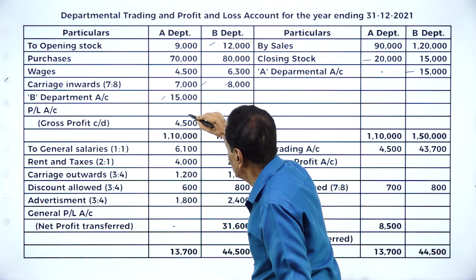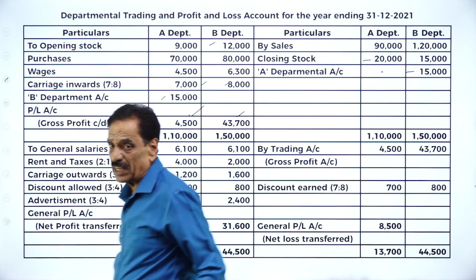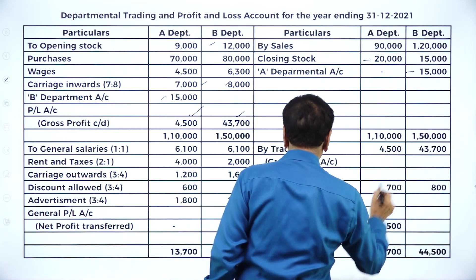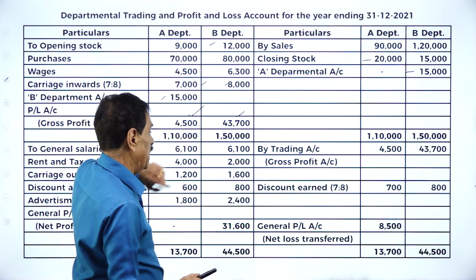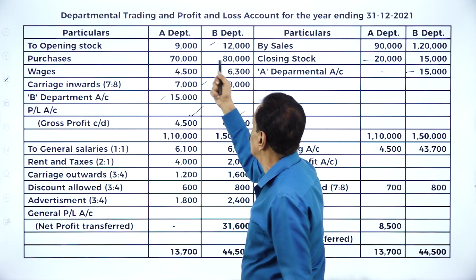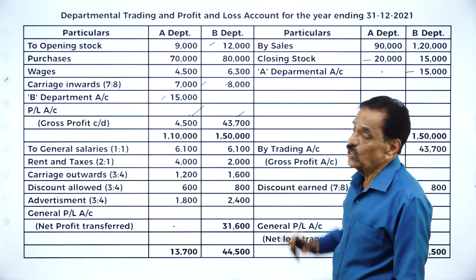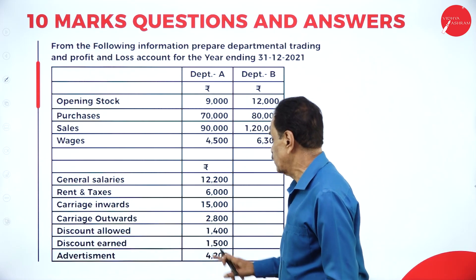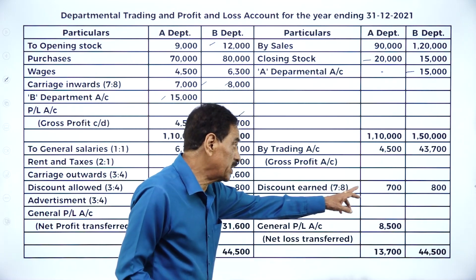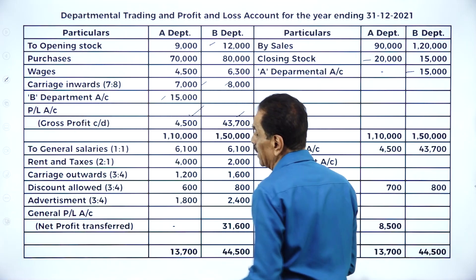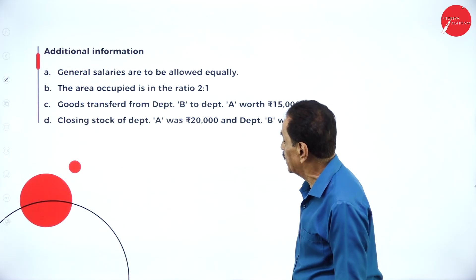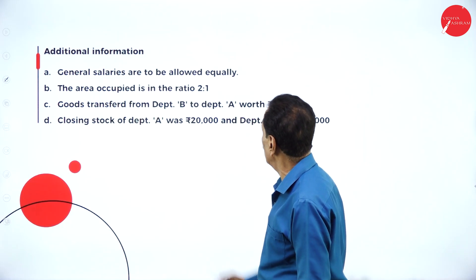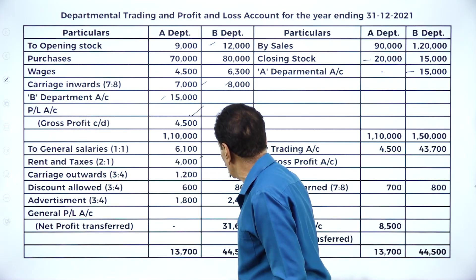After working out the trading account, the gross profit result is 4,543,700 and this will be transferred to the profit and loss account. Discount earned on purchases: purchases are 70,000 and 80,000 — cancelling zeros they are in the ratio of 7:8. So 7/15 of 1,500 is 700 and 8/15 is 800. Salaries are equally distributed: 12,200 divided equally gives 6,100 each. Rent based on area in ratio 2:1 — 2/3 of 6,000 is 4,000, another is 2,000.